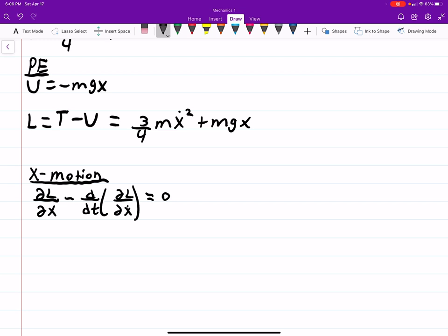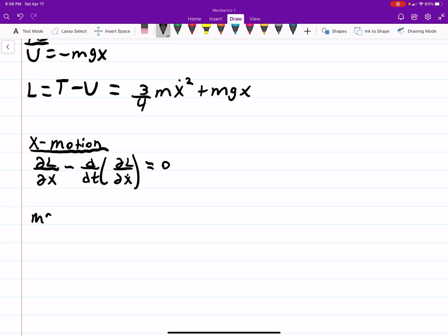Now dL by dx will leave us with just mg. This is the only term with an x, and this is the only term with an x dot. So then minus d by dt of dL/dx dot. So that's going to be 6 over 4 by the power rule, which is 3 halves m x dot equal to 0.